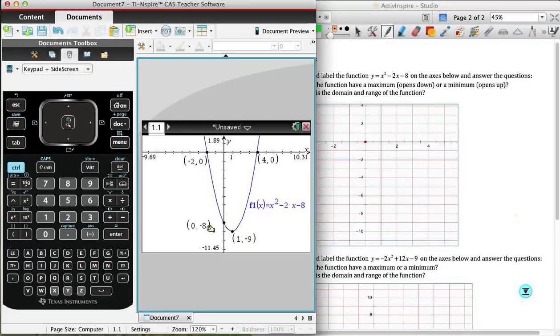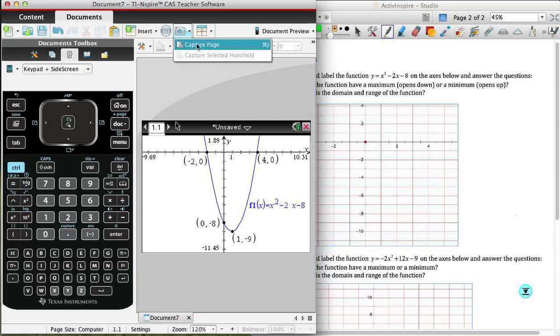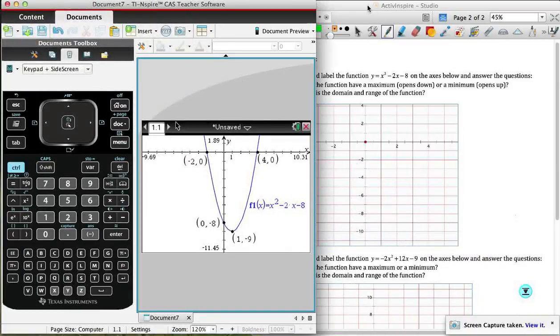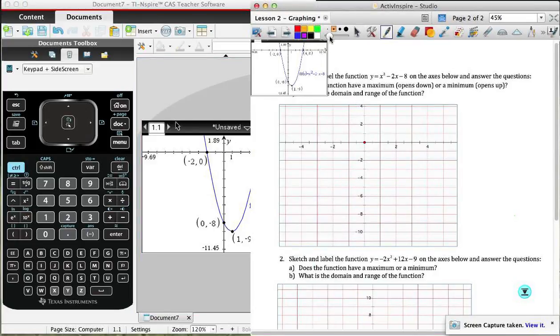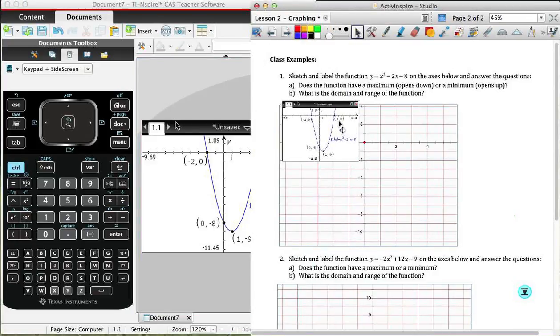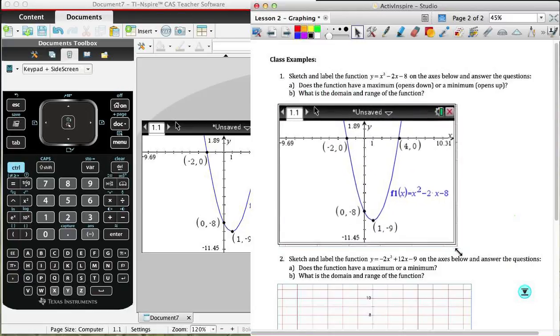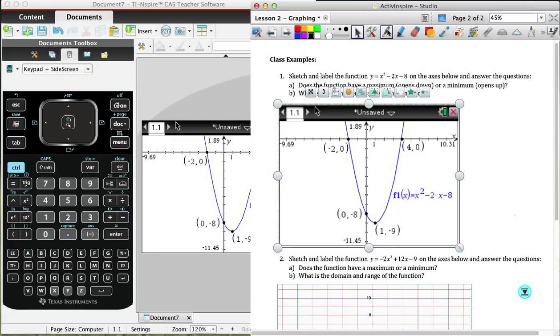And what we've got now are all of our key components. We have our y-intercept, our vertex, and our x-intercepts. Okay. And so what I'm going to do very quickly is something you don't have on your calculator. I'm just going to take a quick picture of that page so I can copy it on to my note. And I'll just move that over there. And this will allow me to annotate the graph.